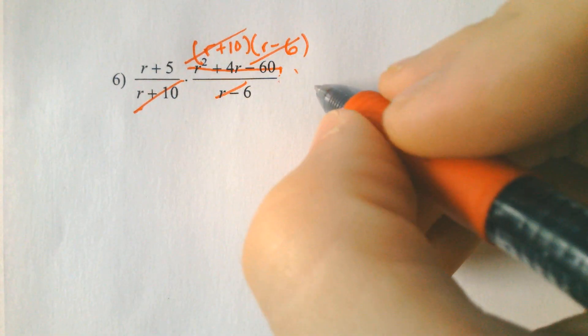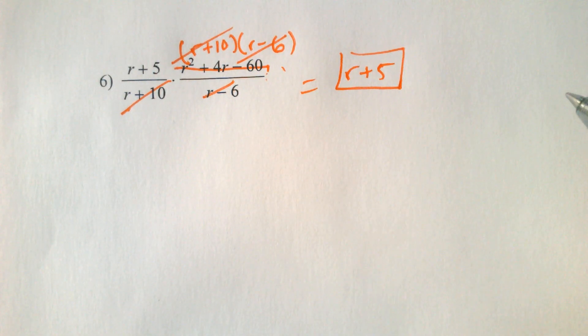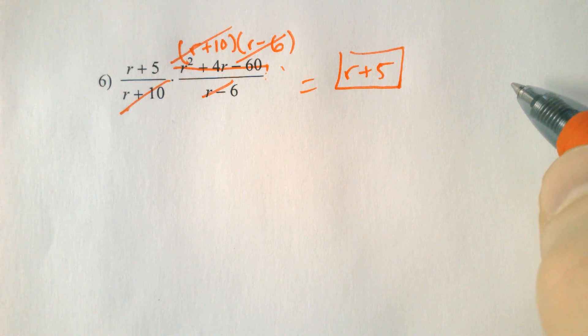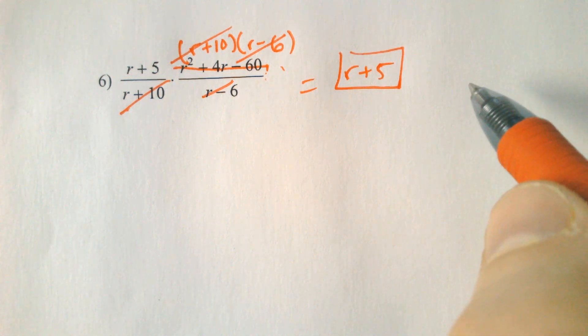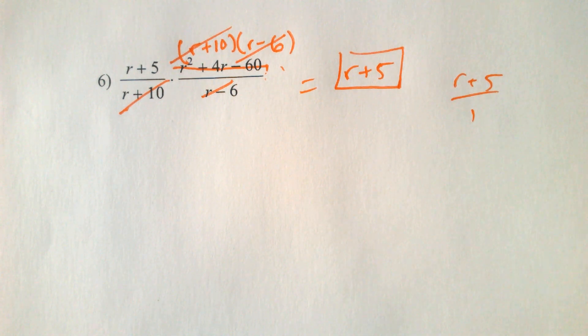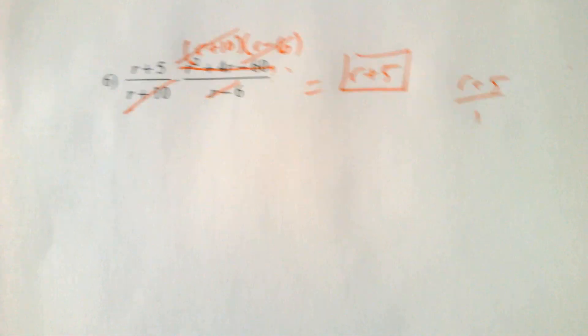r minus 6 cancels, and the r plus 10 cancels, leaving us only with r plus 5. If there's nothing on the top of the fraction, you can keep it that way. If there's nothing on the bottom of the fraction, I think I said it backwards. If there's nothing on the bottom, you can keep it. You don't have to write r plus 5 over 1. If you had the 1 on the top, you would have to write 1 over. You can't just leave it without nothing on the top, but you can leave the r plus 5 by itself.